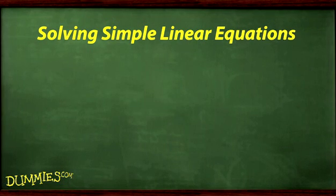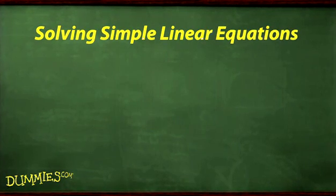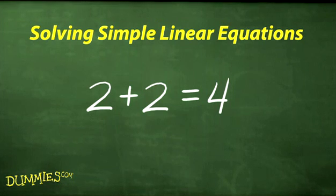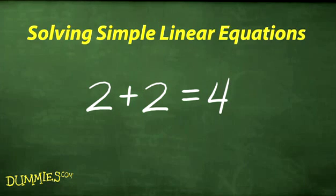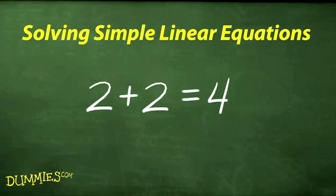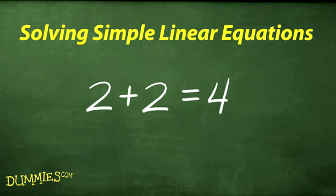In algebra, linear means that the highest power of any variable you're solving for is 1. Instead of having just an expression with no equal sign and no relationship to anything else, an equation always has an equal sign. It also states that whatever is on one side of the equal sign equals the other side.